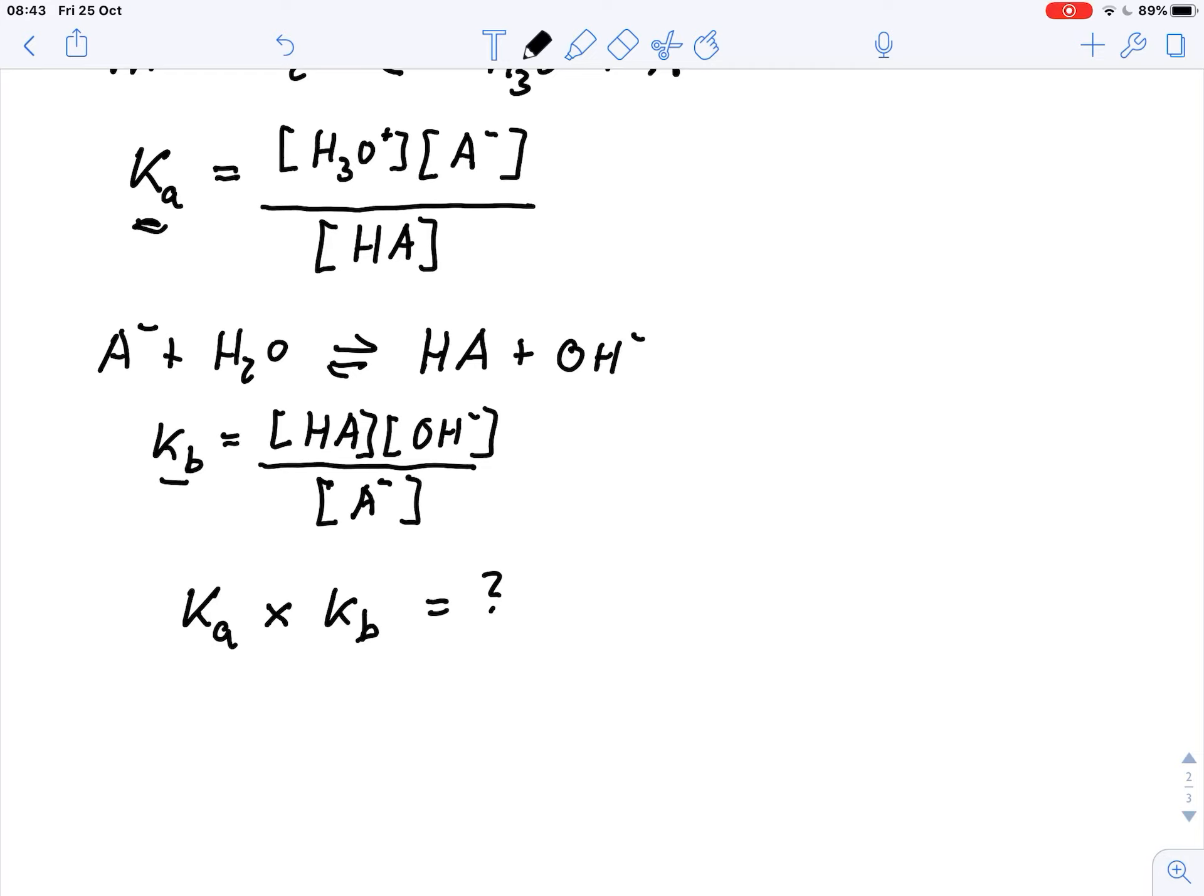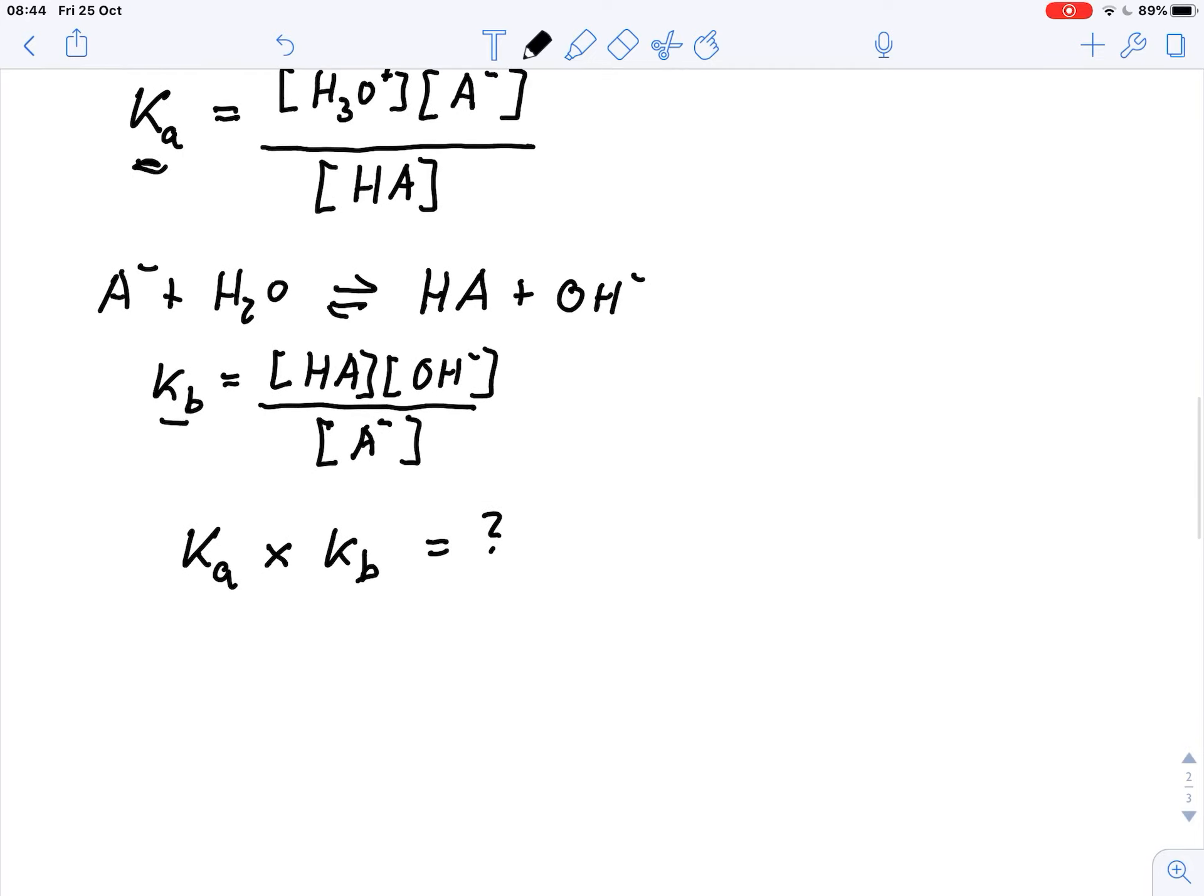So let's just simply follow our equations. For Ka I write the concentration of H3O plus times A minus divided by HA. So that's my Ka.